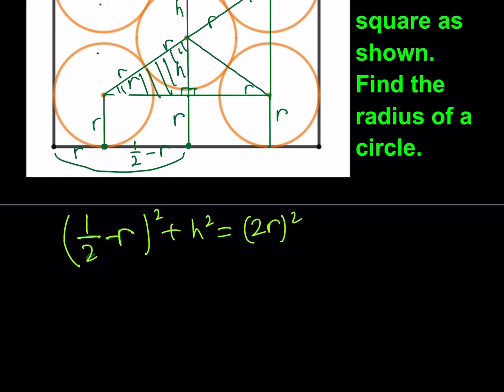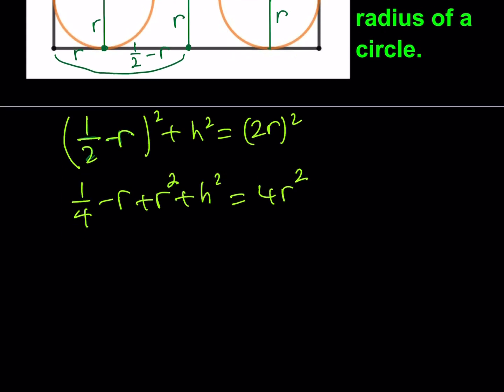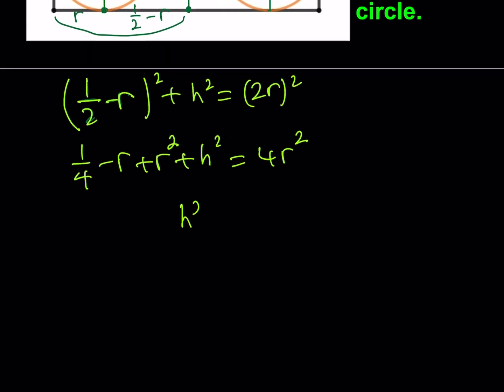So in this part, what we're going to do is we're going to find H in terms of R. That's the plan. Let's go ahead and expand this. One fourth minus R plus R squared plus H squared is equal to 4R squared. So from here, we can get an expression for H squared if we subtract everything on the left-hand side besides H squared from 4R squared. So, let's see. 4R squared minus R squared is going to be 3R squared. Negative R plus R. And then I'm going to subtract one fourth.